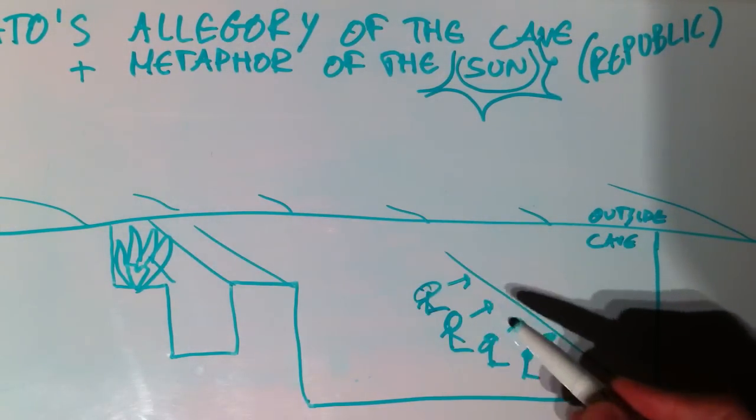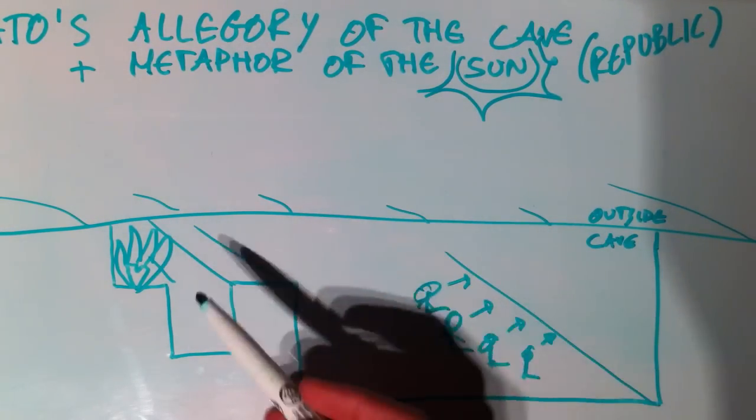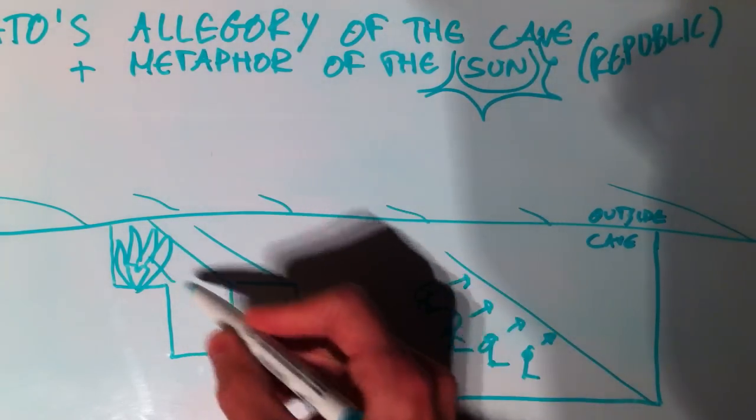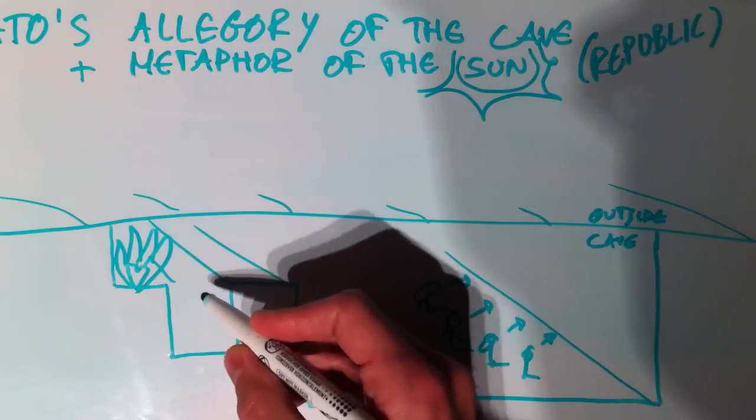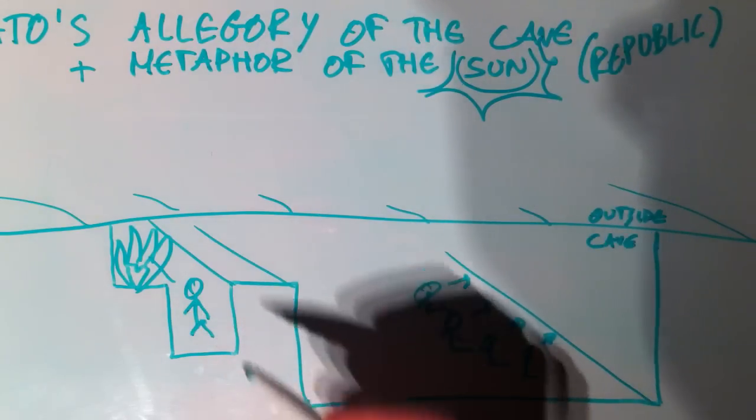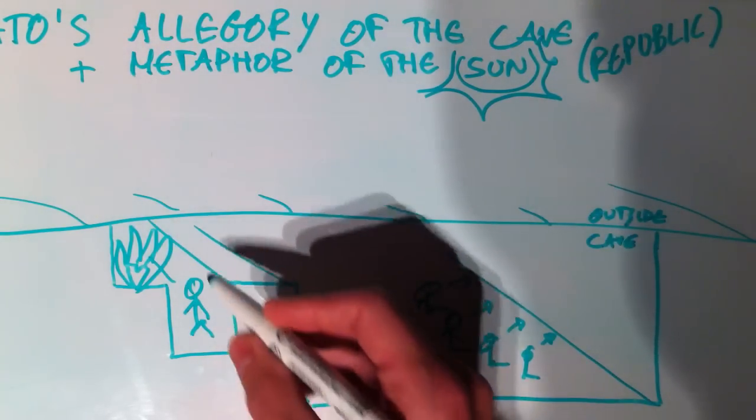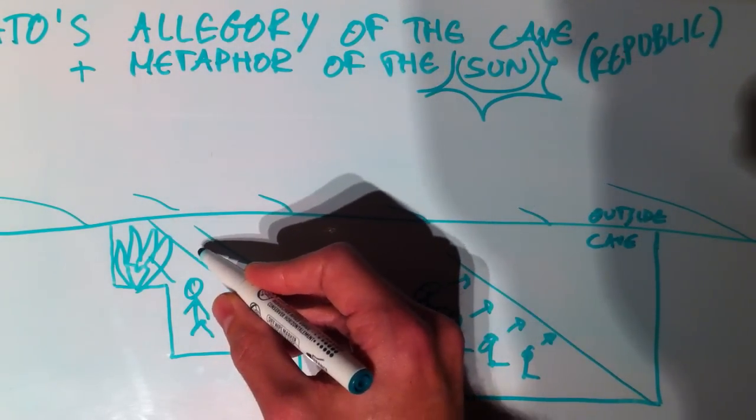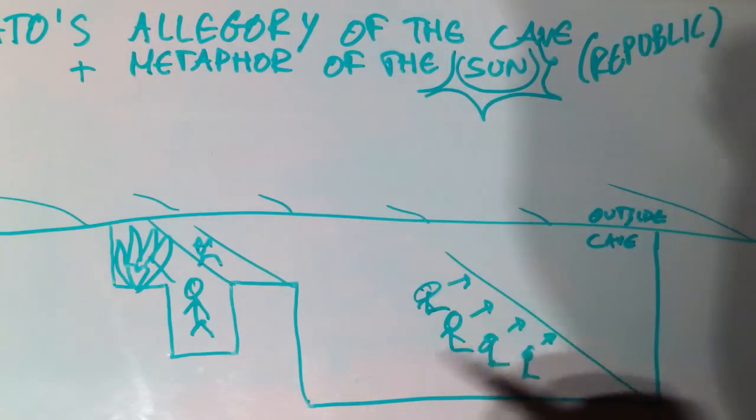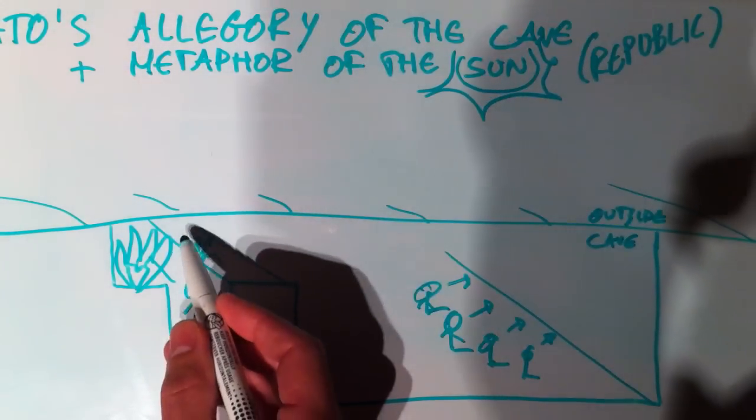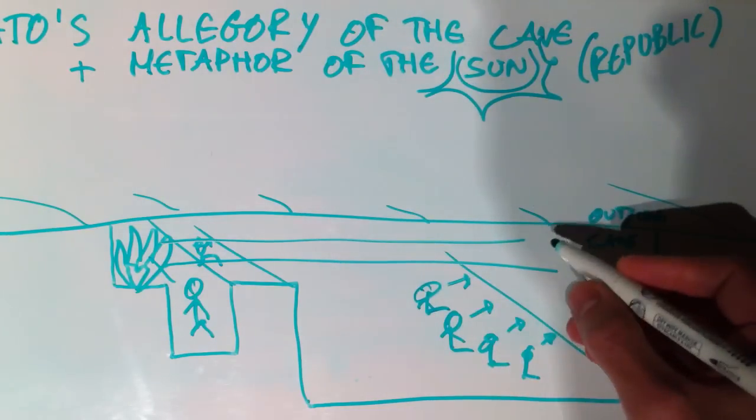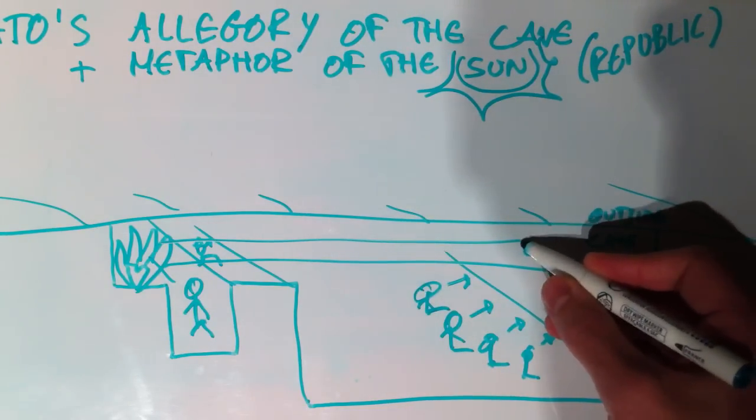These people are inside the cave, prisoners, and in the back of the cave there is a fire. And just in front of that fire there is some room for people to walk through. And what these people do is they carry objects. For instance, an object, let's say the image of a cat. And the fire casts shadows on the wall, so that the prisoners also see something like a cat.